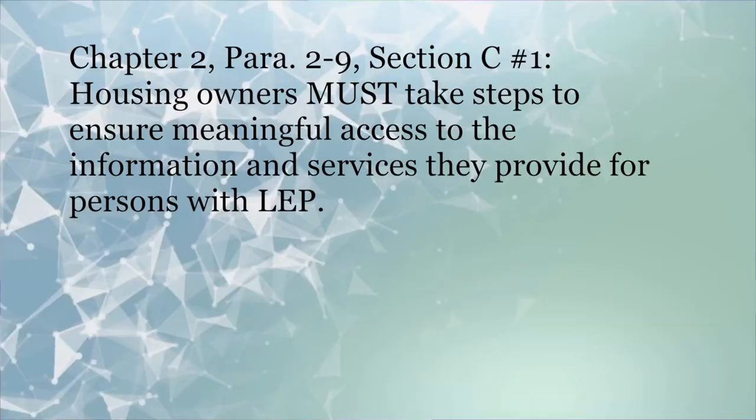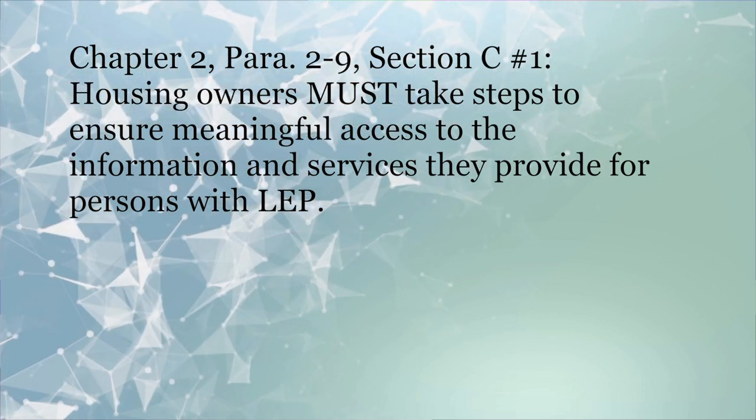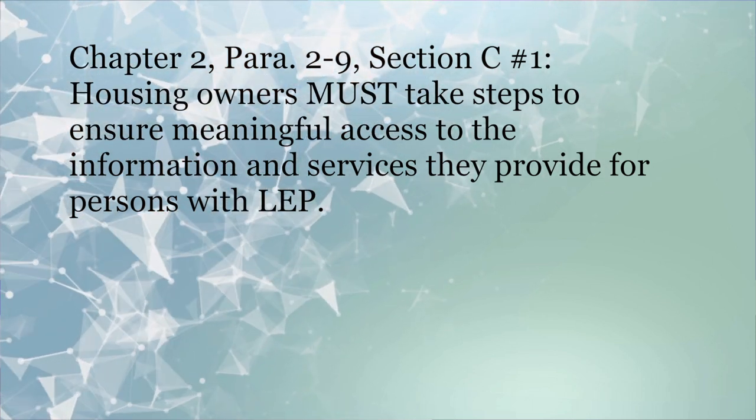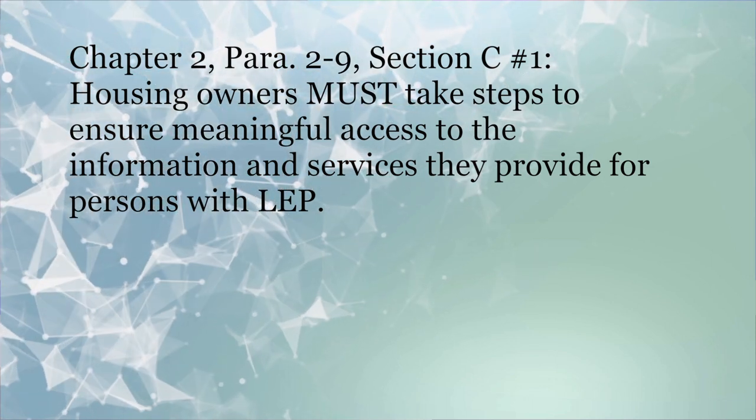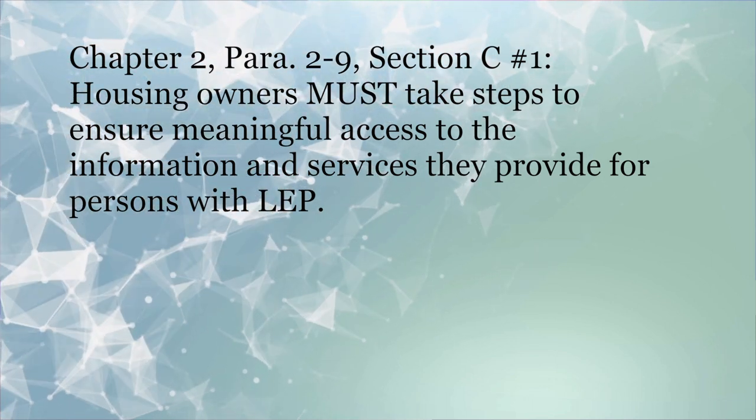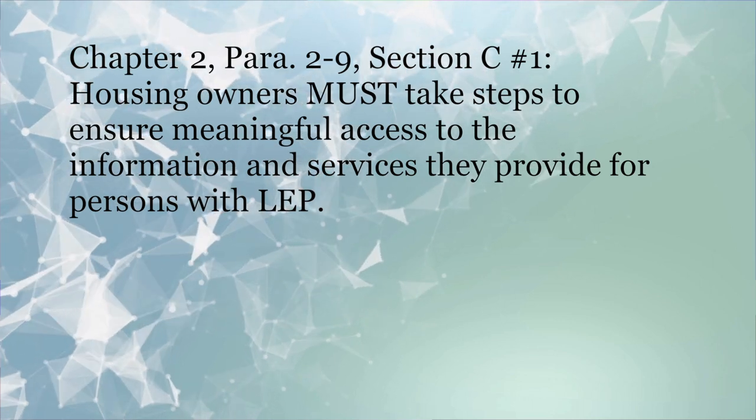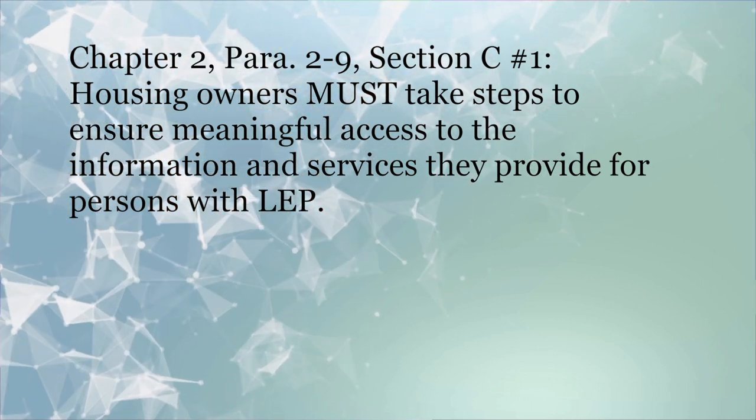In Chapter 2, paragraph 2-9, section C, number 1, it discusses improving access to services for persons with limited English proficiency — we call it LEP. For those who receive federal funds like the HAP benefits, housing owners must — not may or can, but must — take steps to ensure meaningful access to the information and services they provide for persons with LEP.